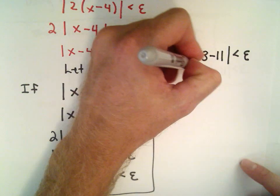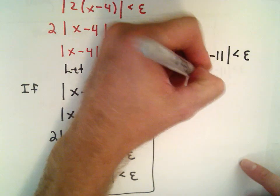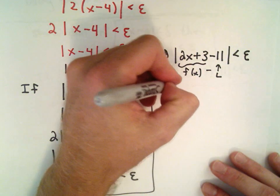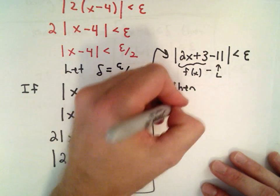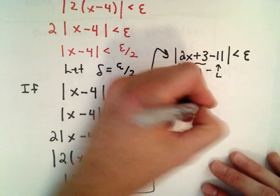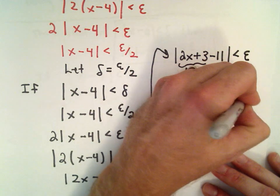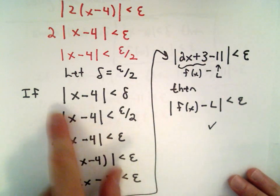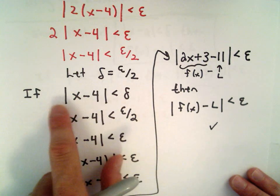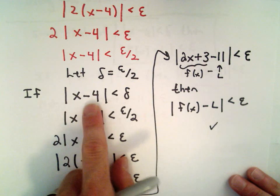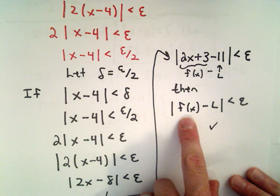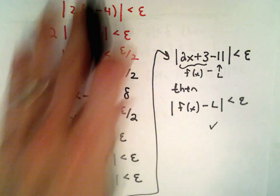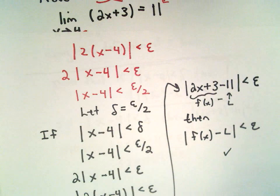Well again, notice that this is my function f of x minus there's my L value. I've now got that statement that I wanted. I've got that f of x minus L is in fact less than epsilon. So I have logically started from this relationship and I've shown that if x minus a is less than delta, then in fact f of x minus L is less than epsilon, which means I have proven that limit using the definition.